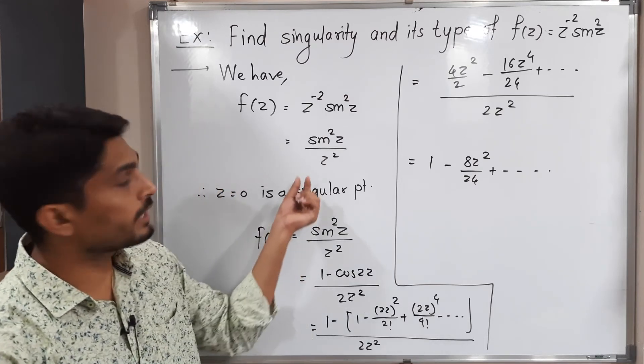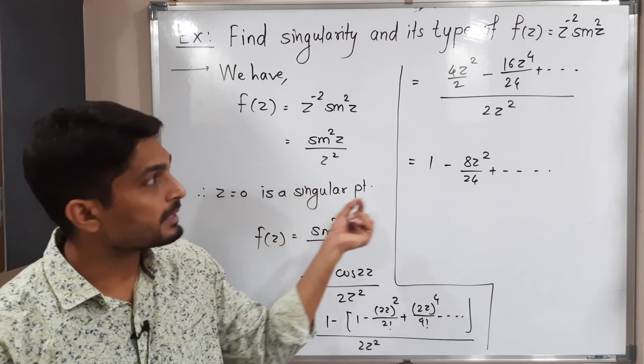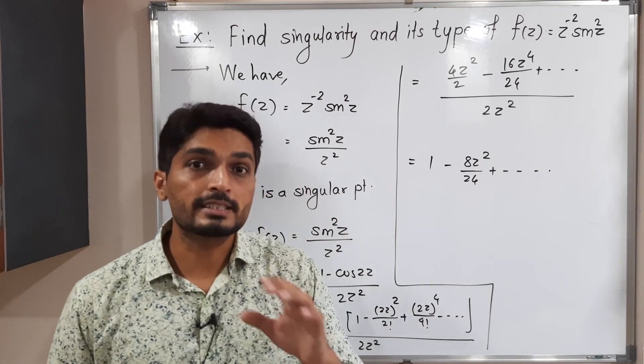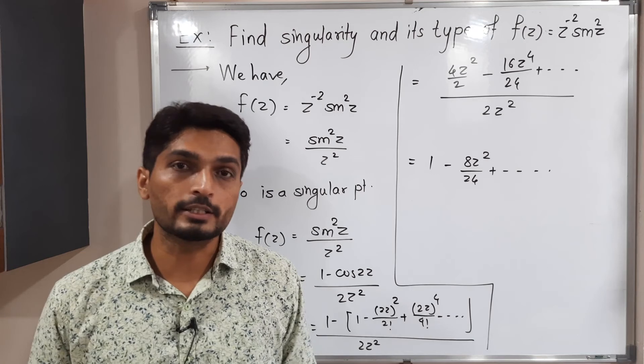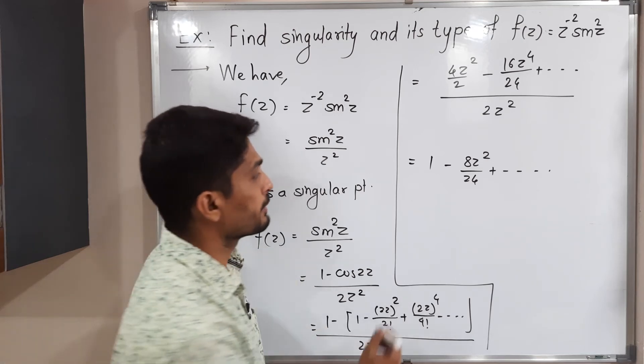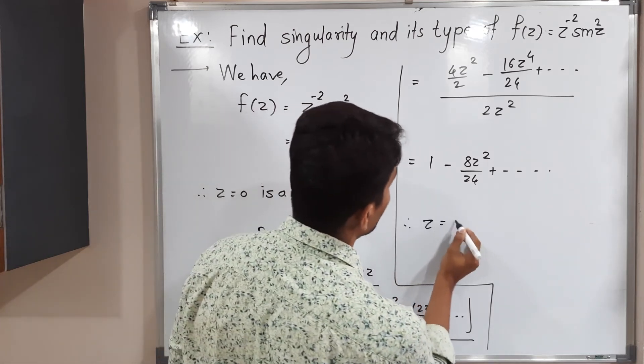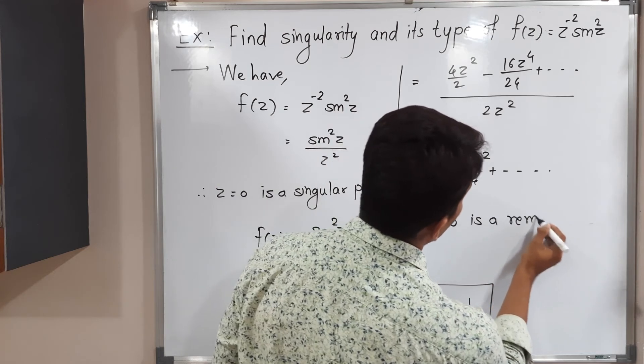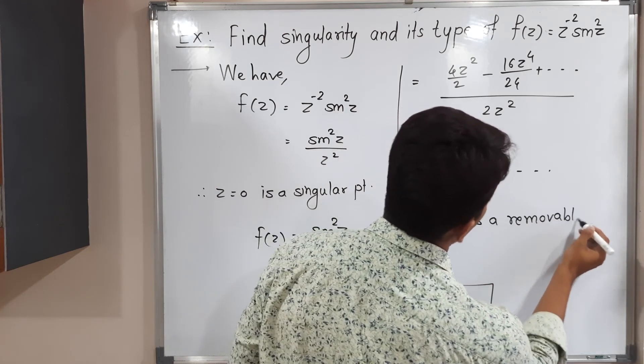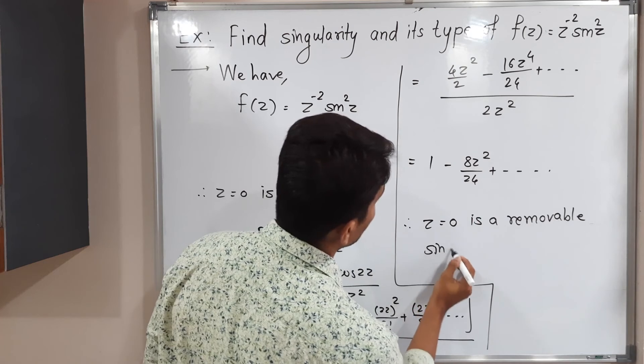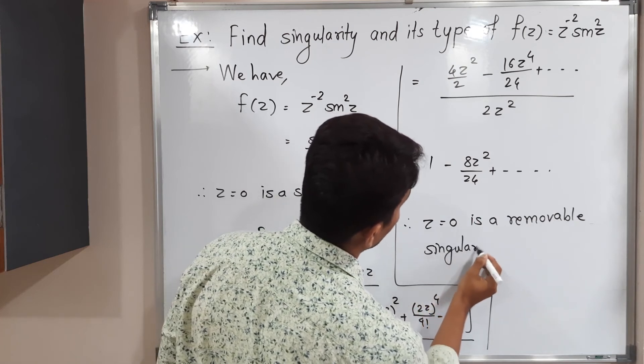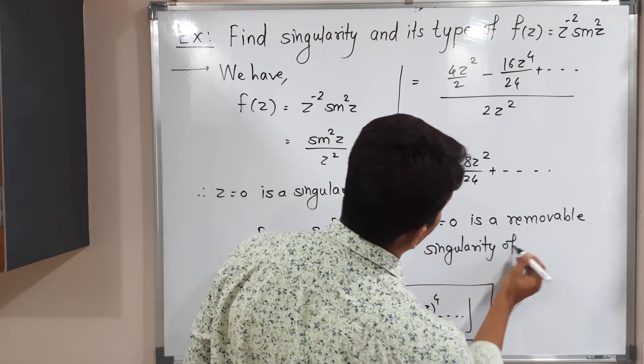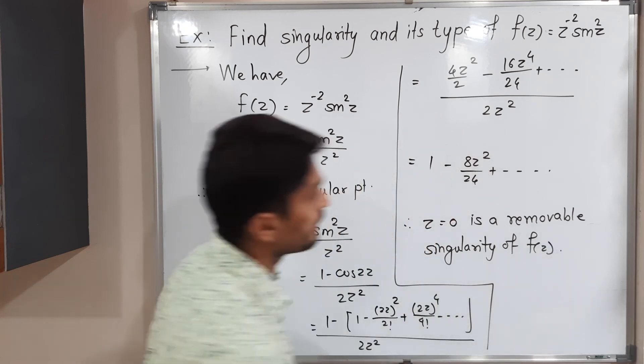Since z = 0 was a singularity we found here, but see when we find the Laurent series that singularity is removed since there is no principal part. So therefore z = 0 is a removable singularity of f(z). This is the required answer.